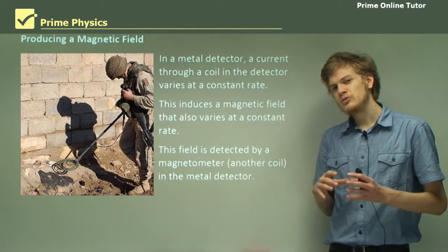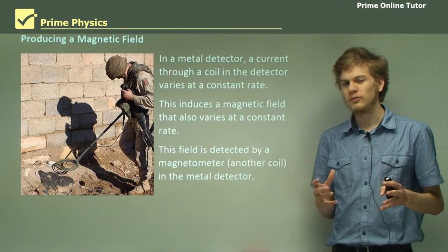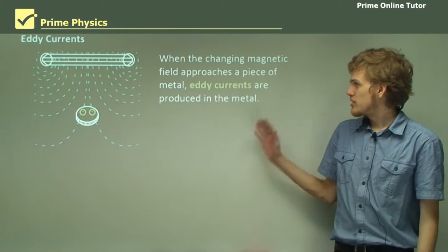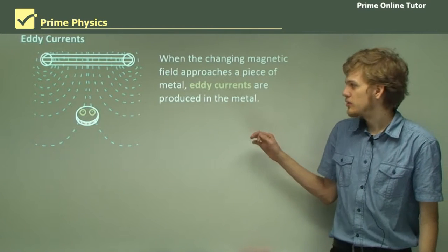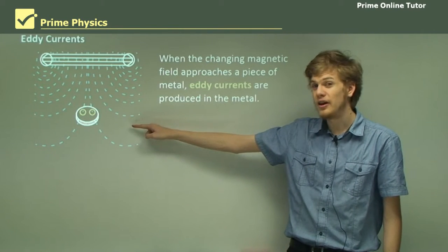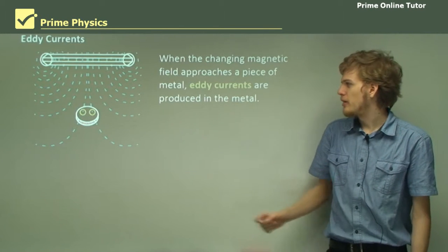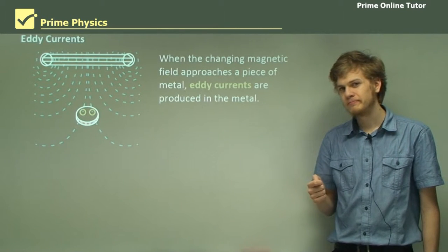Now what happens if we introduce another piece of metal to the equation? When the changing magnetic field approaches a piece of metal, such as this little metal disc in the diagram, we get eddy currents producing the metal, represented by the little yellow circles.